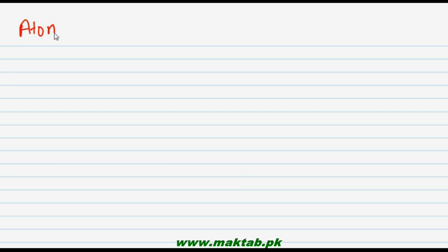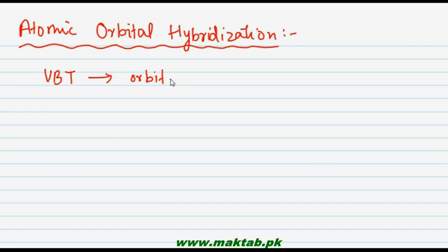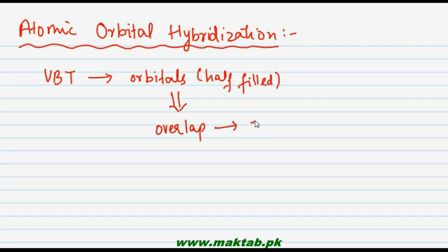Our today's topic is atomic orbital hybridization. अब तक चीज हम पढ़के आई हैं VBT के अंदर वो यह थी कि जो orbitals होते हैं which are half filled, they overlap and form the bond. तो bond formation के लिए जो चीज हमने देखी थी कि half filled orbitals मुझूद होने चाहिए और उनकी overlapping जो है वो ज़रूरी थी — this was the basic concept of VBT.